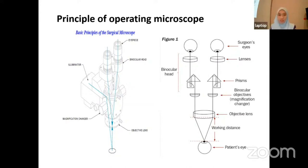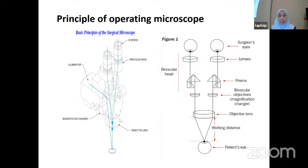If you look at the photos, this explains the basic principle of the operating microscope. Basically, we need two compact lenses — the objective lens and the eyepiece (IP) lens — separated by a distance greater than the focal length of each lens. The working distance is the distance between the objective lens and the main focusing lens. With all this, a surgeon will be able to see a sharp, clear, and magnified image of the patient's eye.